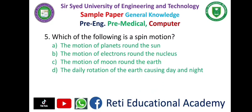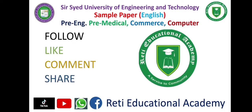Question 5: Which of the following is spin motion? — A. The motion of planets round the sun, B. The motion of electrons round the nucleus, C. The motion of moon round the earth, D. The daily rotation of the earth causing day and night — and the correct answer is D. The daily rotation of the earth causing day and night.